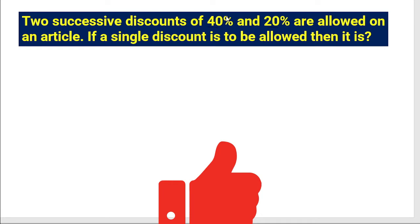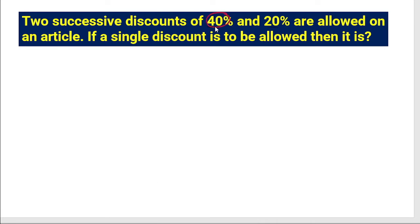In this question, two discounts are given — 40 percent the first time and subsequently 20 percent — and we need to find the equivalent single discount. For this type of problem, we will take the tag price or mark price of the item as 100 rupees.